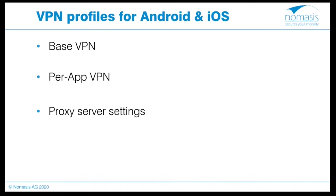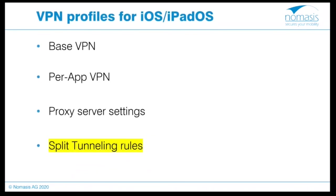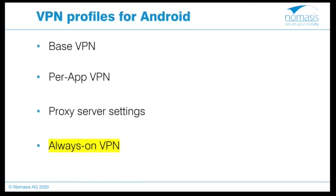Both platforms are configured the same way up to this point. However, when considering split tunneling, it's important to know that if per-app VPN is enabled for iOS, split tunneling rules will be ignored by the iOS device. The always-on VPN option for Android, as well as the iOS split tunneling rule exemption, represent the key difference between both platforms' device configuration blades.